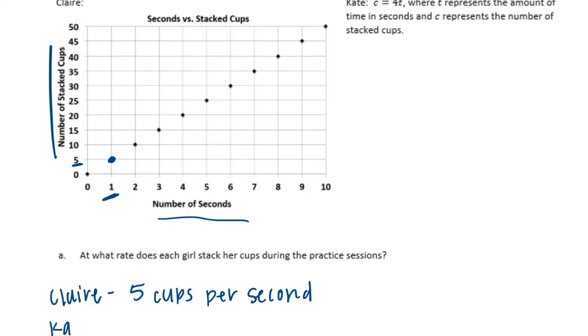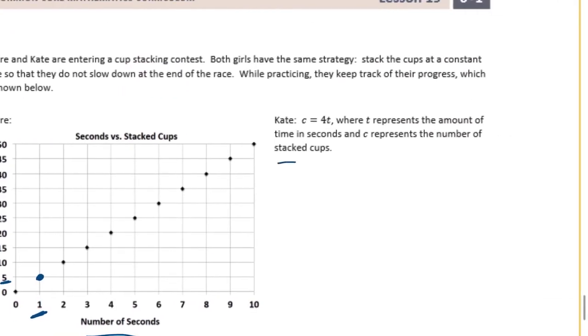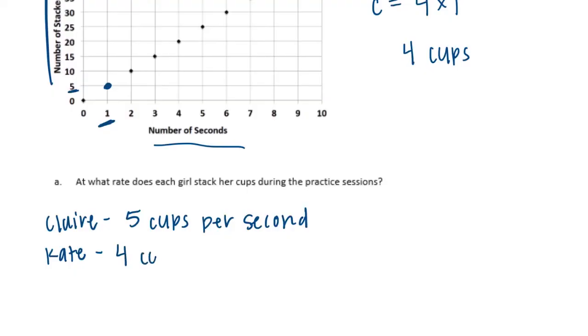Now Kate, they didn't give us a chart to look at, but they did give us a formula right here. So Kate, it says that C equals 4T, where T represents the amount of time in seconds. So this is time. And C represents the number of stacked cups. So the time is equal to 4T. So if, for example, C is equal to 4, if we had 1 second, that would be equal to 4 cups per second. So Kate can stack 4 cups per second.